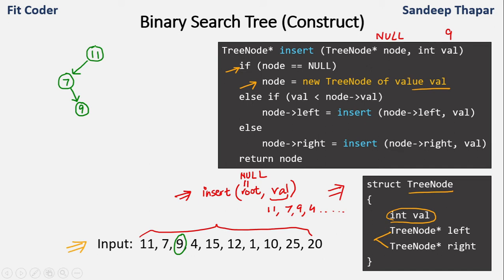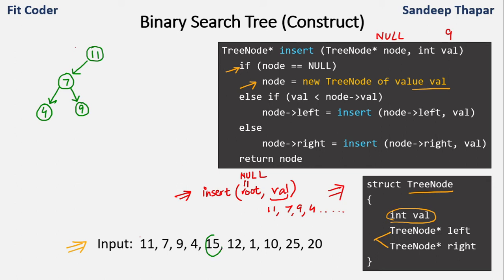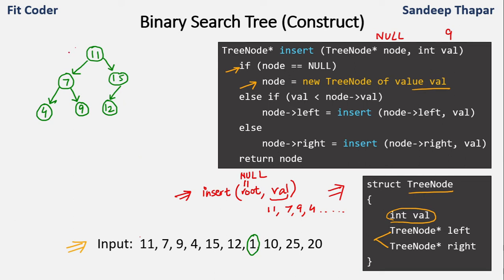Continuing construction: 4 is less than 11, less than 7, so we create node 4 to the left of 7. Value 15 is greater than 11, so we create node 15 to the right of 11. Value 12 is greater than 11, less than 15, so it becomes the left child of 15. Value 1 is less than 11, less than 7, less than 4, so it becomes the left child of 4.